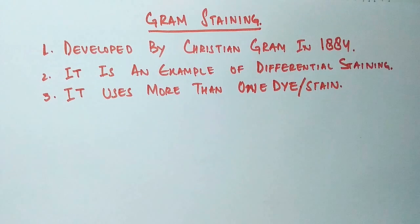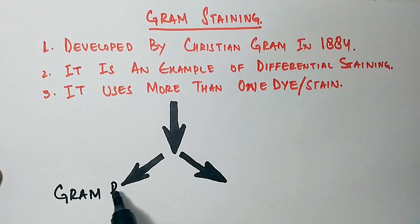First one is called gram-positive bacteria. Second one is called gram-negative bacteria. It is their difference in structure that makes them two different types of bacteria.